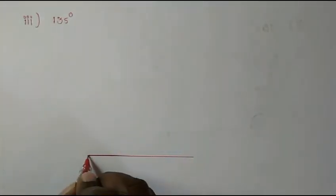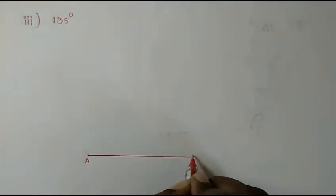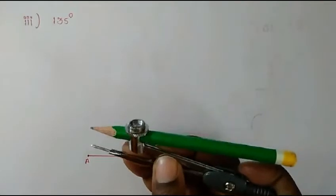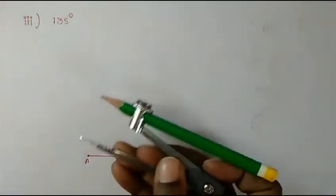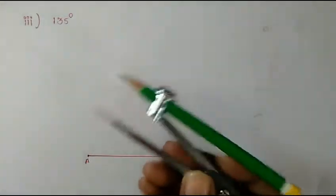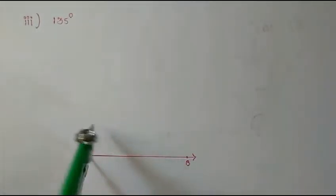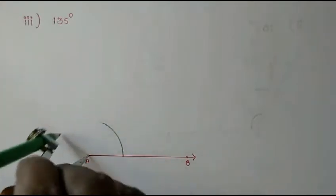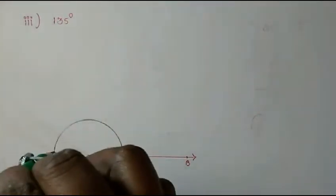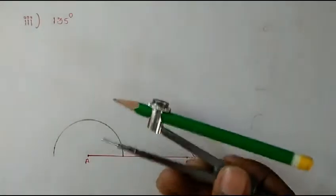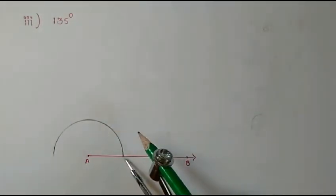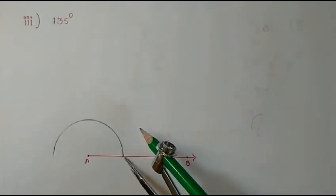First, we will draw a ray. Let's name the initial point A and the other end B. Now take the compass — you can open it as you wish. Then keep A as the center and draw one semicircle.